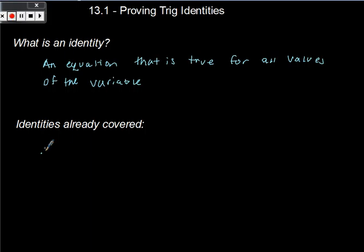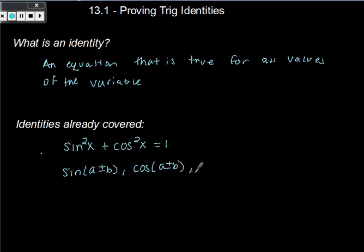And then another one that we've talked about is the Pythagorean identity. So that was sine squared of a value x, an angle, plus cosine squared of an angle is all equal to 1. So we have that one. We have the sine of a plus or minus another angle. We have the cosine formula for adding or subtracting an angle. And then we have our double angle formulas. So we have that sine of 2x formula and cosine of 2x formula.